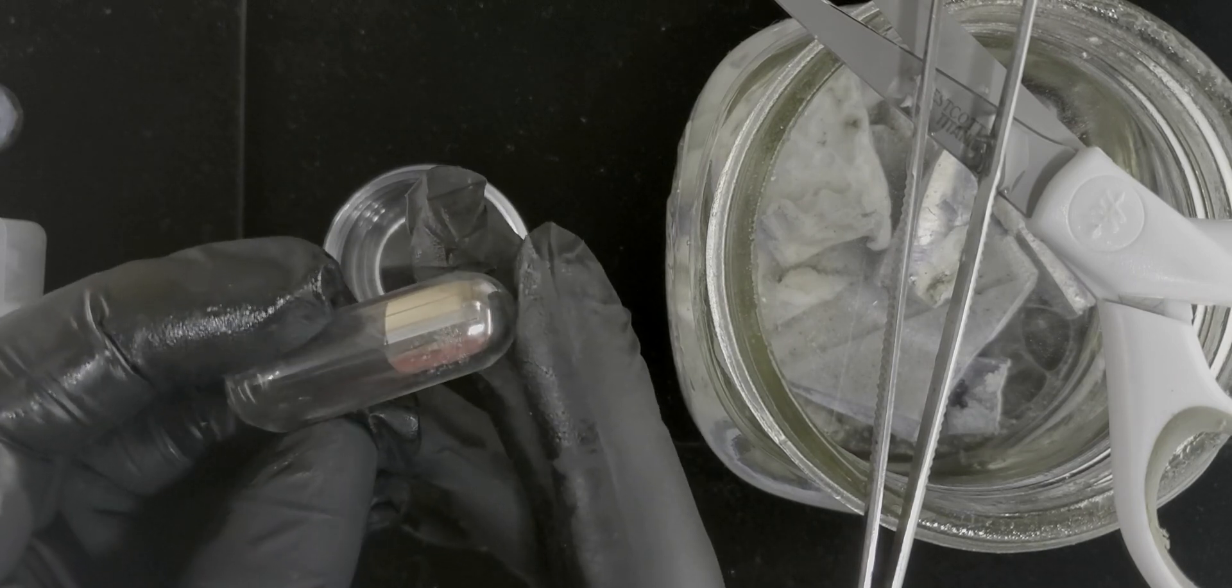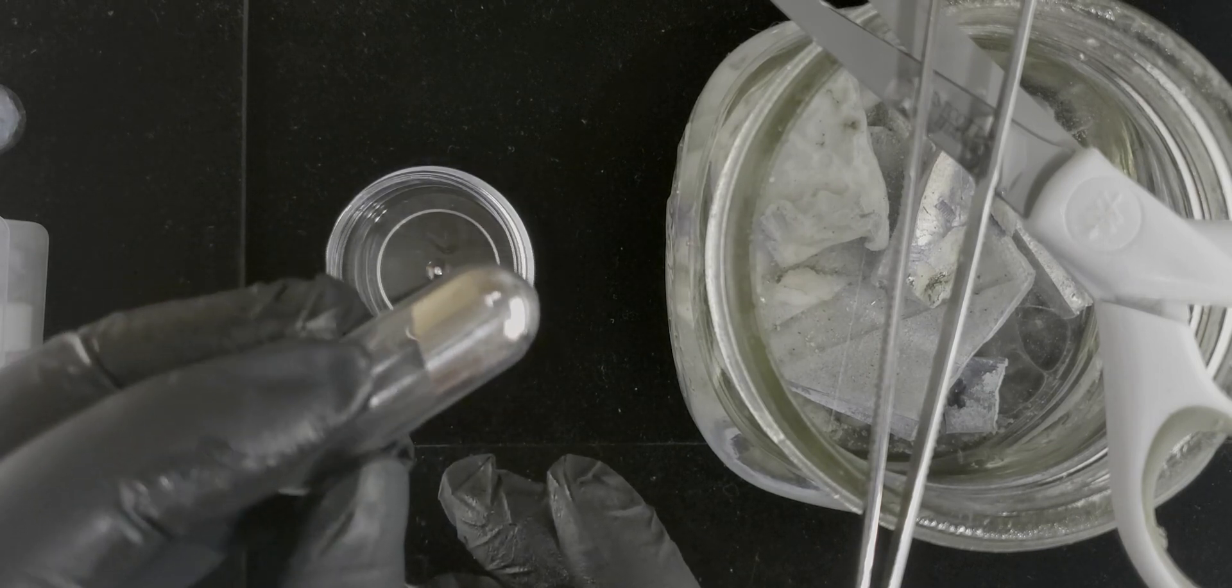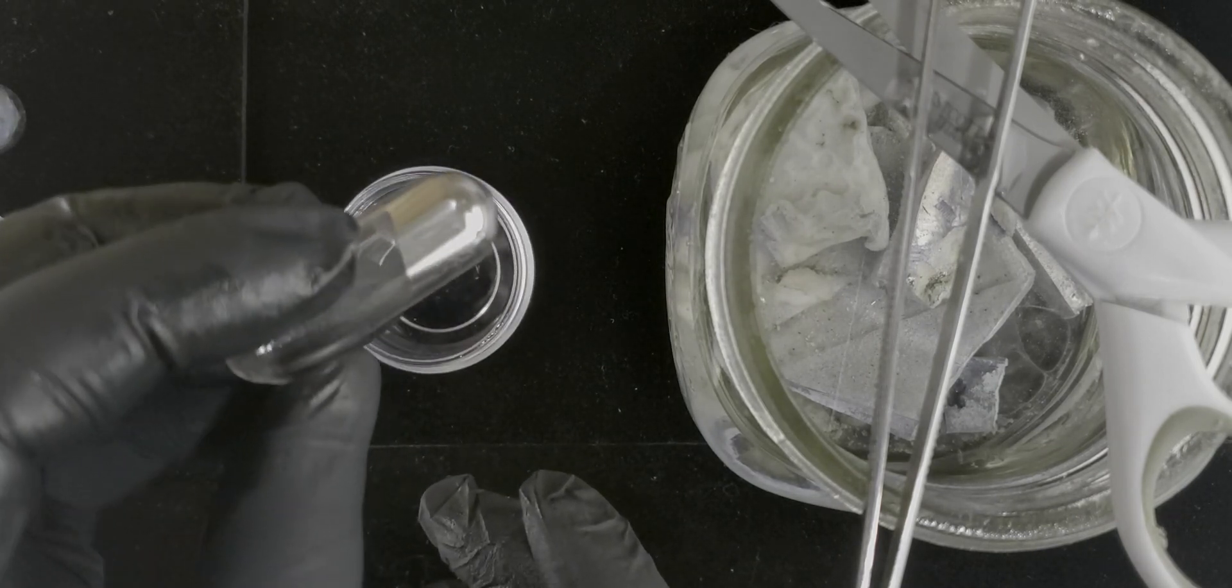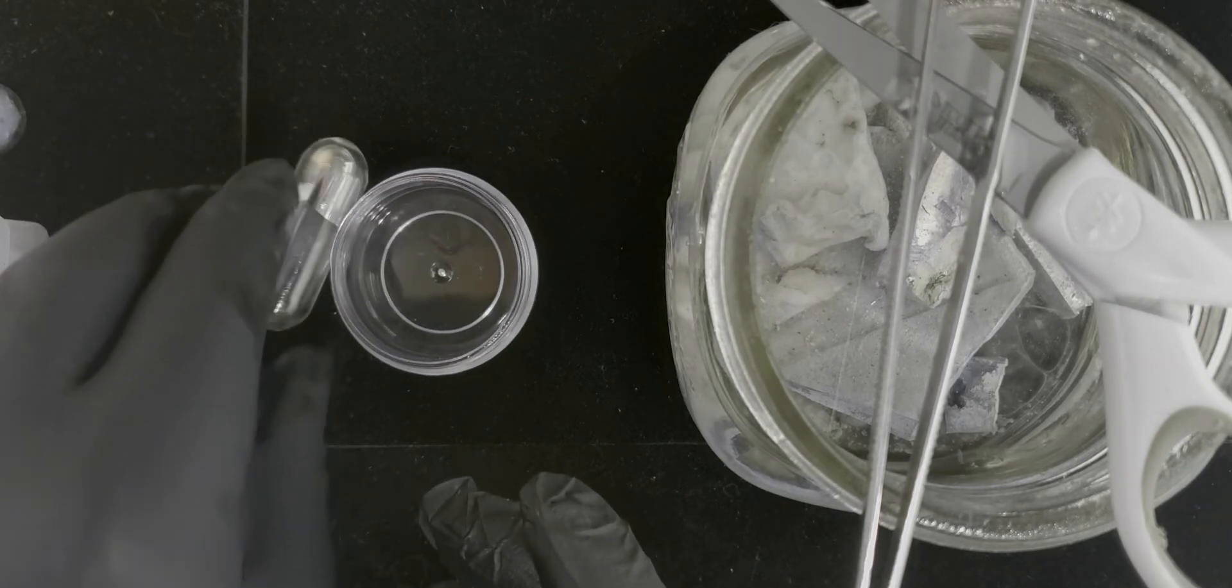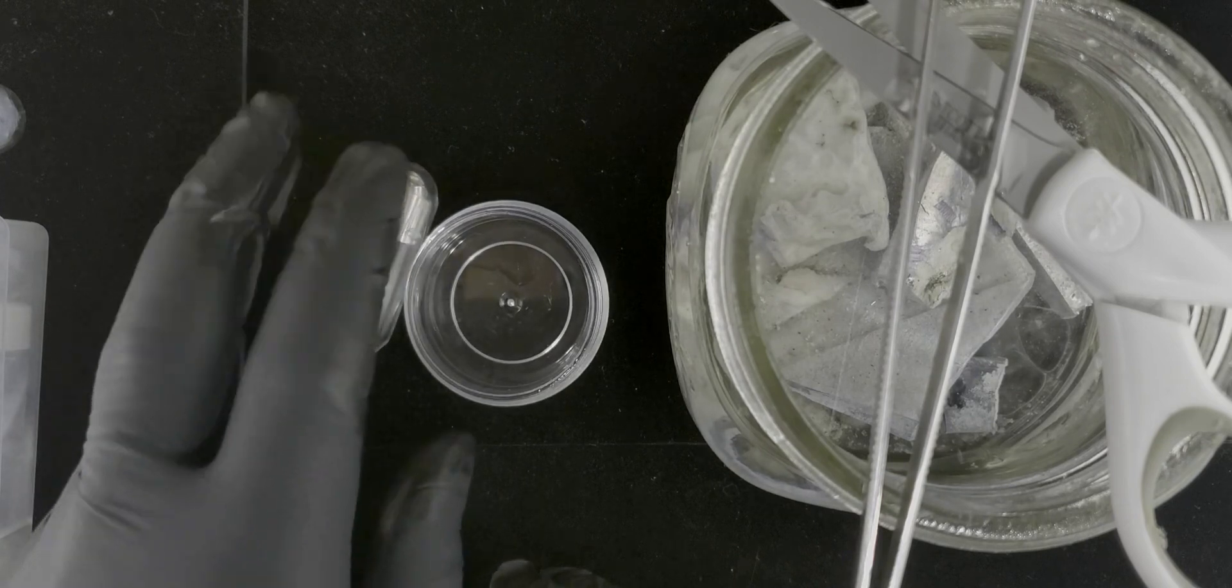If you've ever seen a glove box, those boxes that people stick their hands through, that's what's needed to keep all traces of oxygen out and be able to keep that metal looking like this.